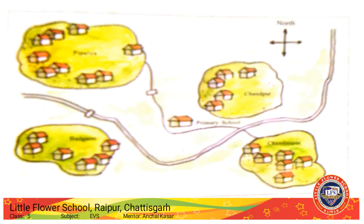This is a map. Look for the narrow path which goes along the western edge of Chandanpur to Badgaon. With the help of arrows, mark the river which flows along Pipalia, touches Badgaon, and then passes through Chandpur and Chandanpur.